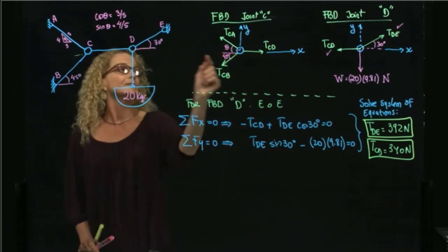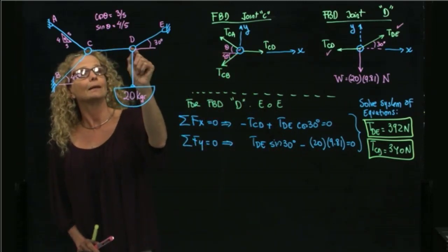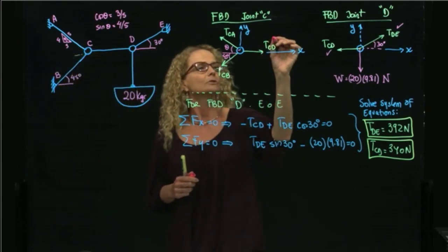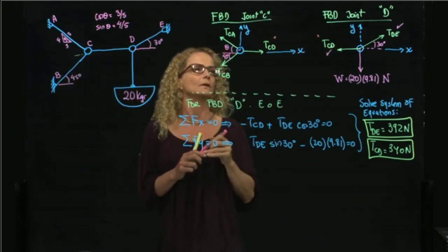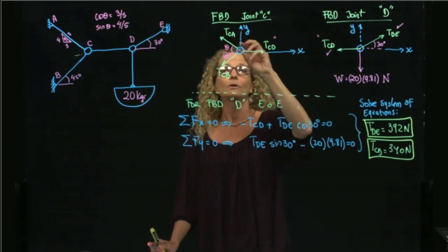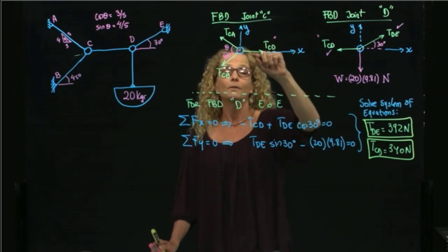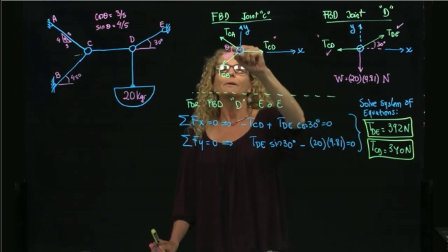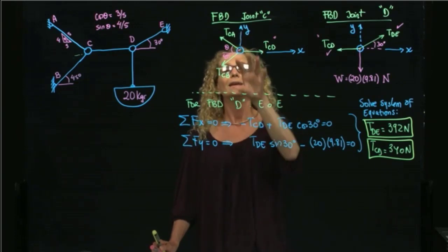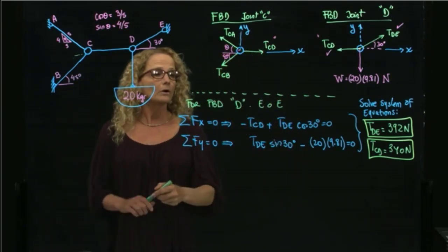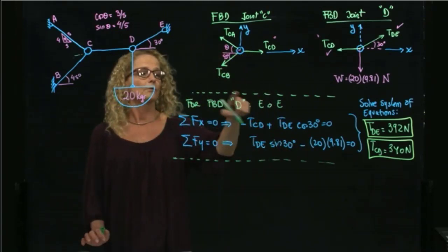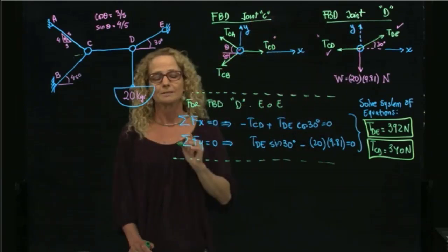By action and reaction, the tension pulling joint D is the same tension pulling joint C. So this T_CD value transfers to the free body diagram of joint C. Before I had three unknowns at joint C, but since I already found one of them, I now have only two unknowns and I can solve that free body diagram.